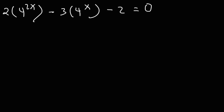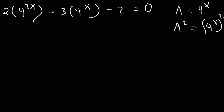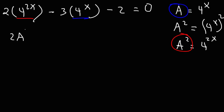At this point, we can factor this exponential equation, but we're going to need to make a substitution first. Let's use the variable a. We're going to say that a equals 4 raised to the x. If that's the case, a squared is going to be 4 raised to the x, squared. When you raise one exponent to another, you multiply, so x times 2 is 2x. Thus a squared is equivalent to 4 raised to the 2x. So let's replace 4 to the 2x with a squared and 4 to the x with a. This gives us 2a squared minus 3a minus 2 equals 0.